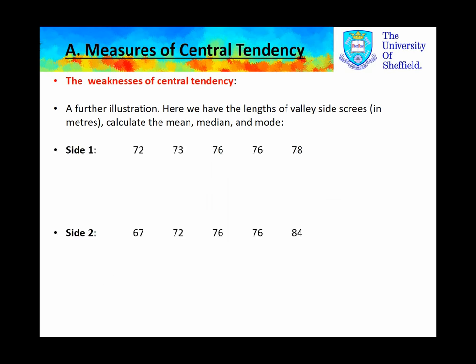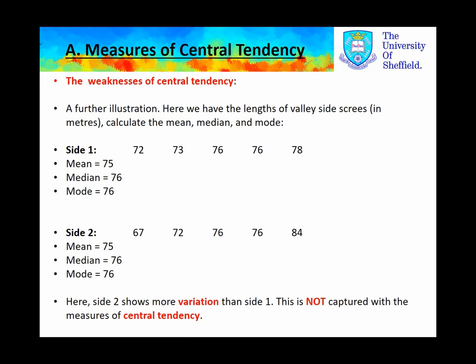A further illustration: here we have two sides of a valley and data sets with exactly the same mean, median, and mode values. But side two has values of 67 and 84. It shows much more variation, which is not captured with the measures of central tendency.